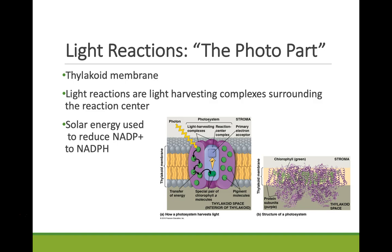The light reactions occur in proteins embedded in the thylakoid membrane. They involve a couple of light harvesting molecules surrounding something called a reaction center. The solar energy absorbed by the light harvesting complexes is eventually used to activate an electron, which can be loaded into our NADPH electron carriers.